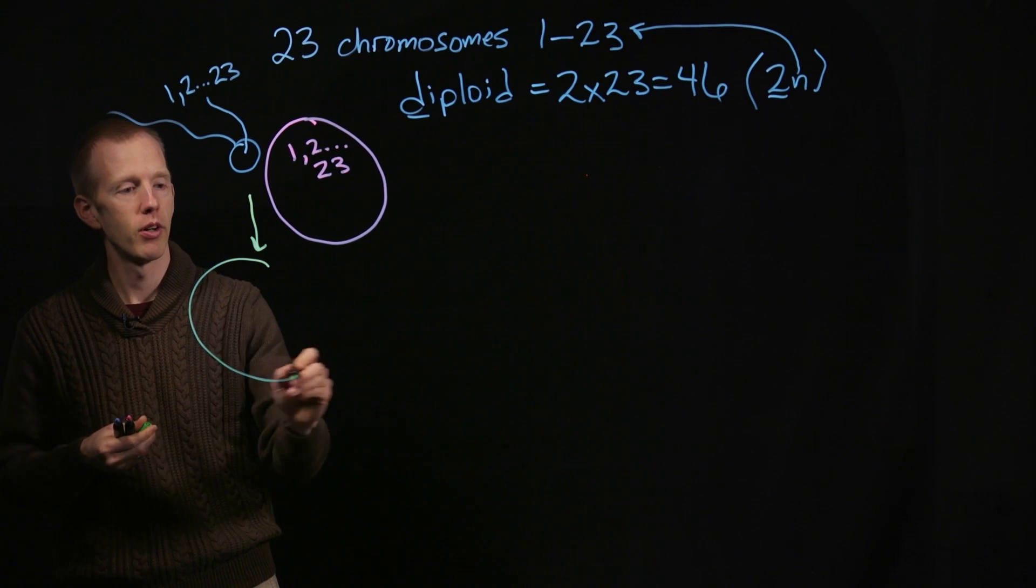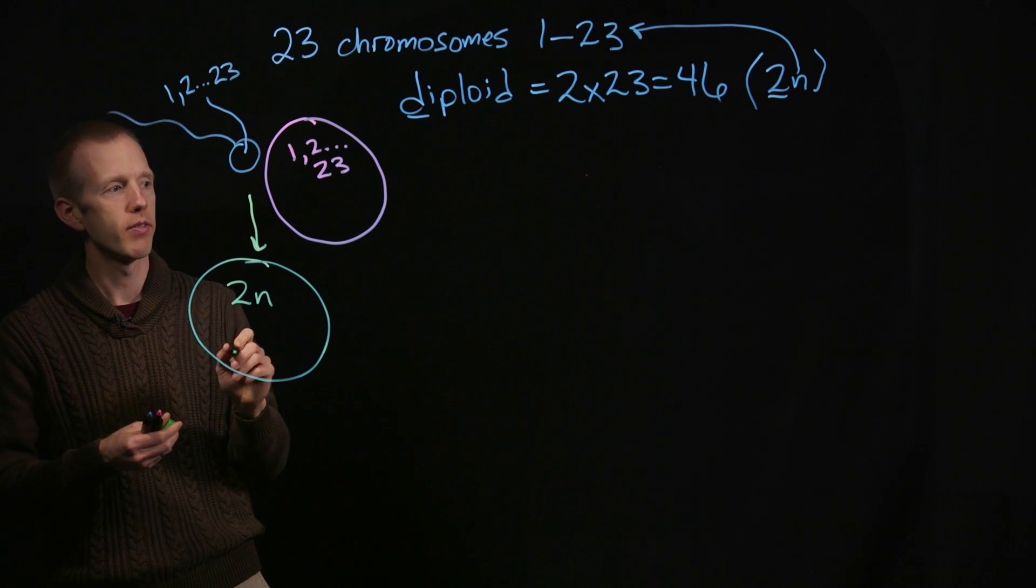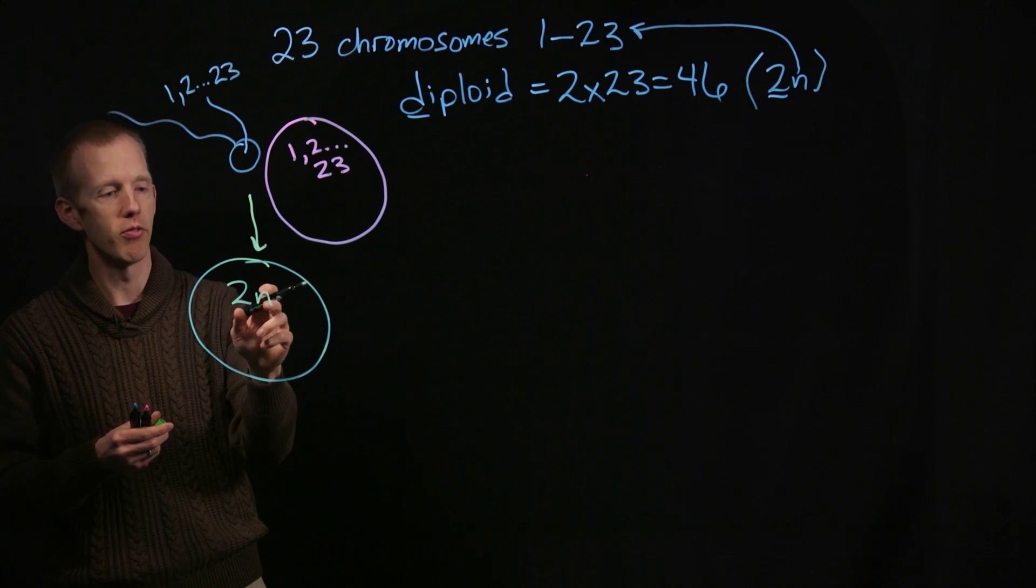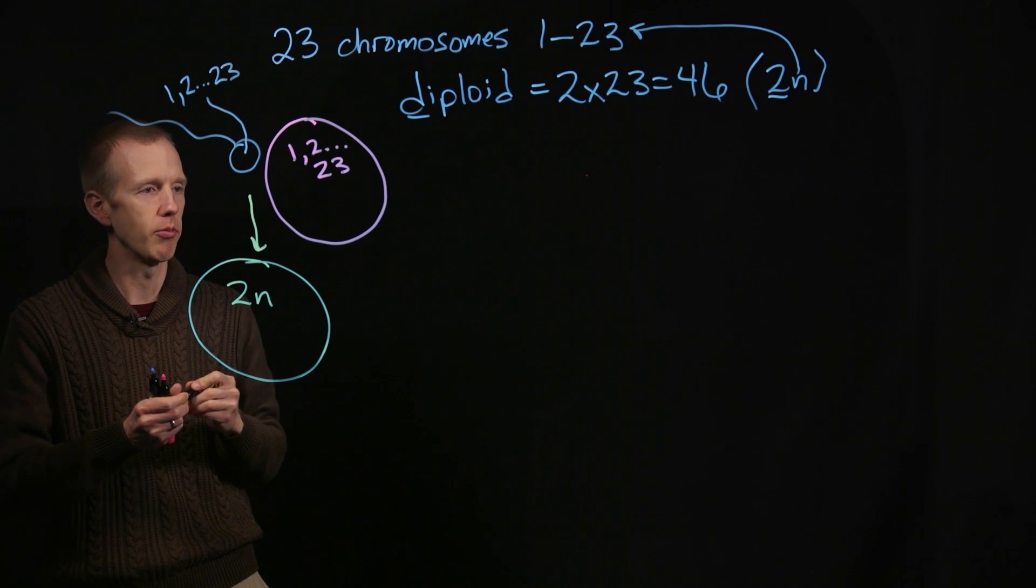And when that fusion occurs, it results in a fertilized embryo that has 2n. It has two copies of 23 chromosomes, one set that came from our father and one set that came from our mother.